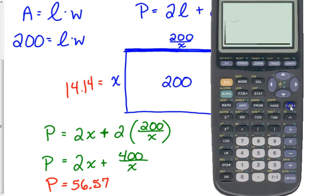We would need to figure out what the other side of that is. 200 divided by 14.14 is 14.14. It is a square. This is a square. The dimensions are 14.14 by 14.14 and it gives us that perimeter.